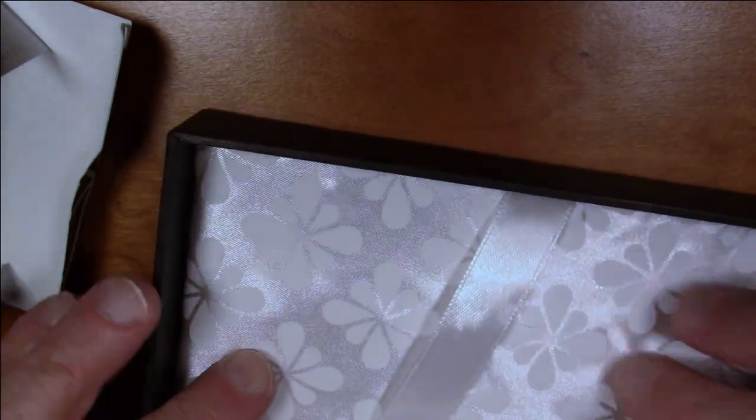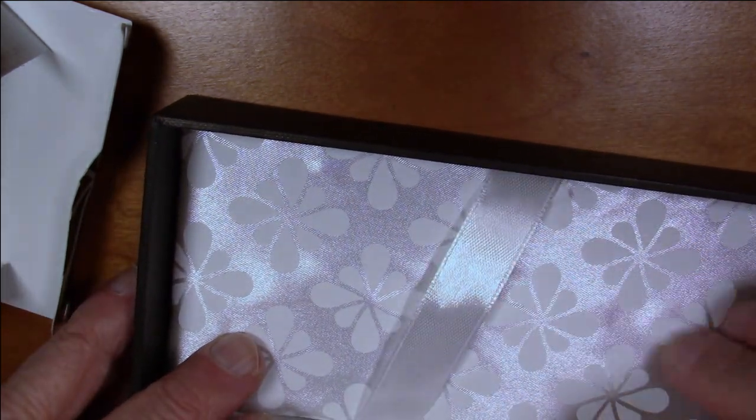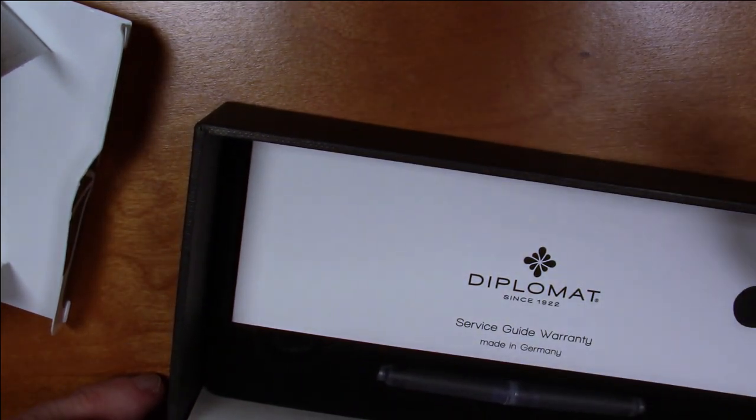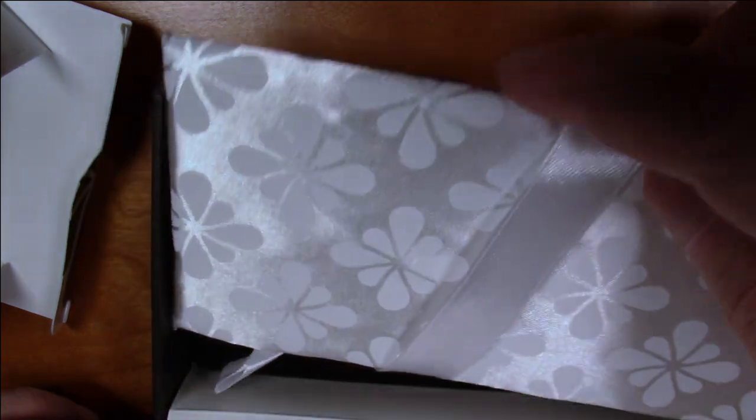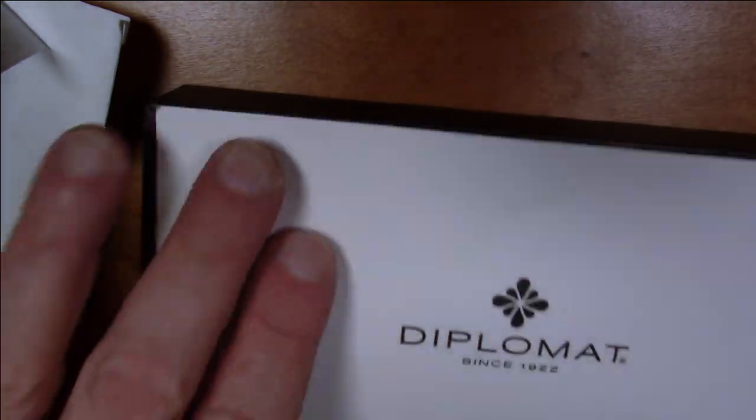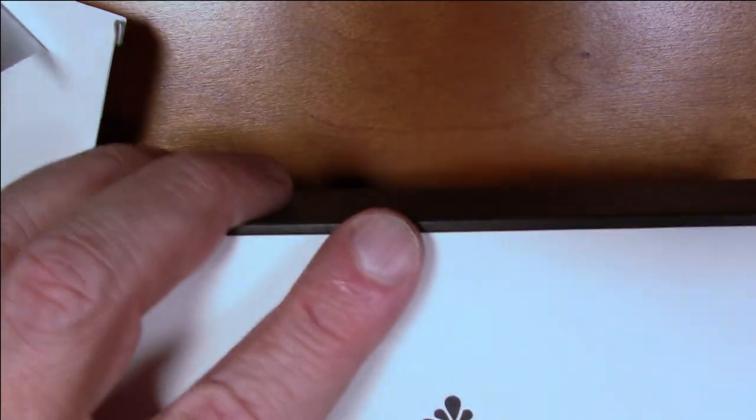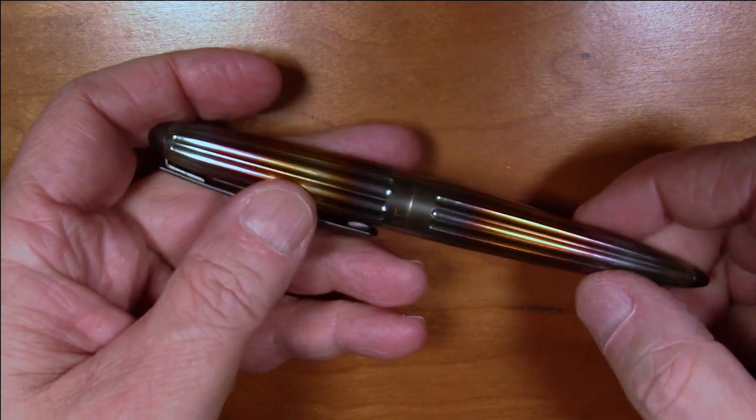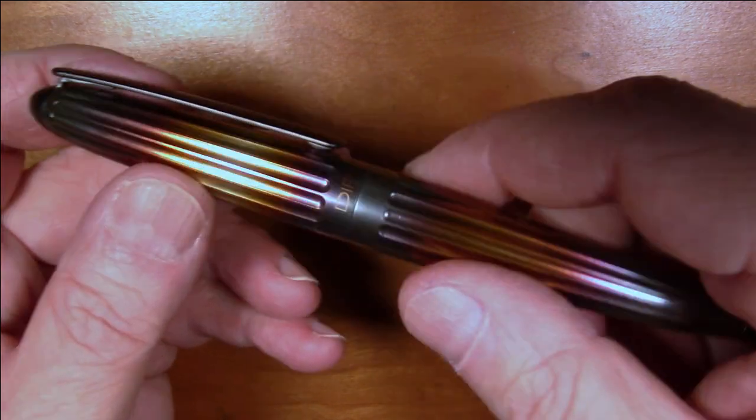Then you have this paper liner, this nice little bed for the pen to rest in. Underneath you have your paperwork and a couple of short standard international cartridges if you decide to go that route instead of the converter. It is really quite nice packaging of this pen, almost a little bit overkill with this metal here. It is quite quite nice.